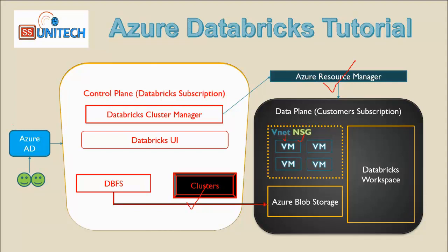Simply put, you log in using Active Directory and submit a task — for example, fetching data from a file. The Databricks cluster manager handles that task and reaches out to the Azure Resource Manager. The resource manager checks the virtual machines on the VNet: if one is available, it processes the task; if two are available, the task is split across both. After getting the response, it is passed back to the cluster manager and then back to the user.